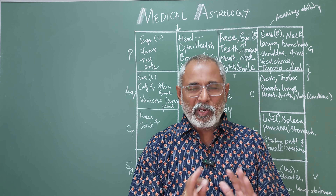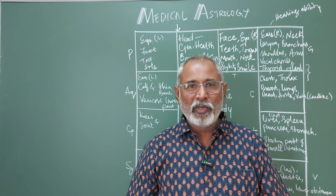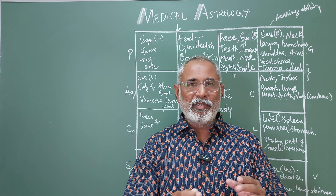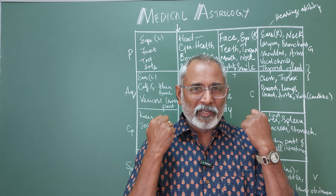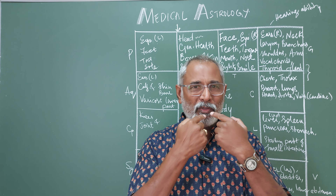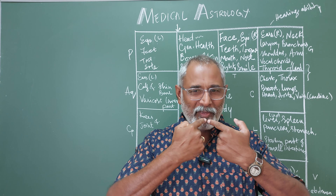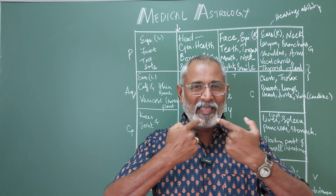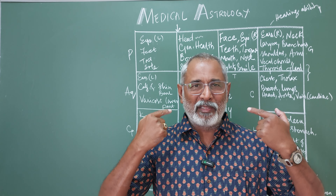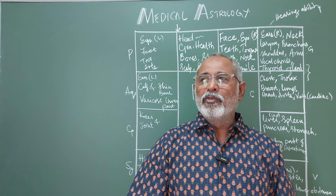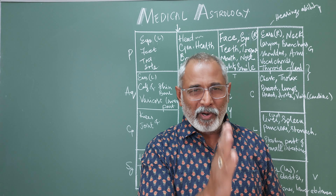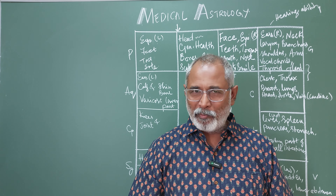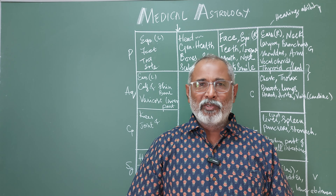God has given us two eyes, two nostrils, two ears, and the mouth has exactly an equal number of teeth on either side. That is why the midpoint is very much important here.